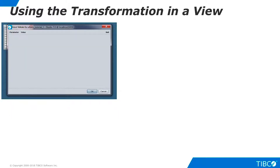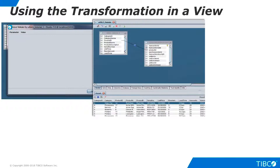Now let's use the transformation in a virtual view. Create a new view and drag the transformation onto the model canvas of the view. Because a transformation is a type of procedure, you will see a parameter panel appear when you drag in the transformation. It is blank because this transformation does not have any input parameters. Simply click OK. Now open the Examples folder, expand the DS Inventory data source, and drag in the Inventory Transactions table. Join the two resources on the Product ID column, fill out the projection in the Grid panel, and execute the view. We have successfully created a join between an XML document and a database.